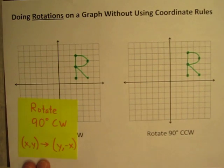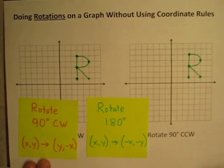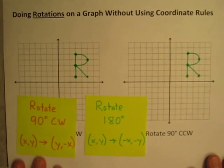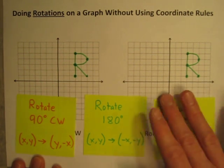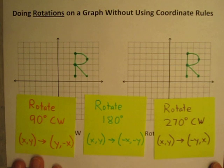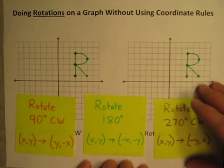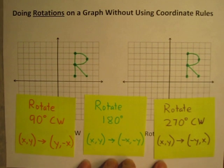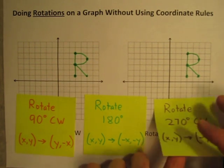I can show you the other coordinate rules if you'd like to pause it. Here's the coordinate rule for a 180 degree rotation, and here's the coordinate rule for a 270 degree clockwise rotation. But I'm not going to bother with these in this video — you can pause here and copy those down if you're curious, but forget about them for now.